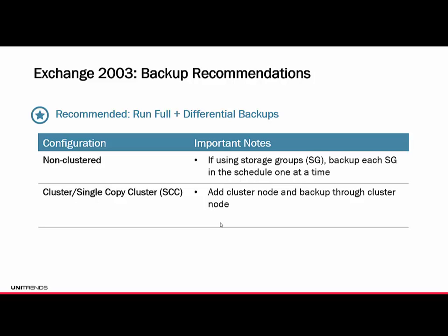For Exchange 2003, run full and differential only — we don't support incrementals for 2003. If it's non-clustered and using storage groups, back up each storage group in the schedule one at a time, staggering them out. If it is clustered with a single copy cluster (SCC), add the cluster node and back up through the cluster node — not the local IP address or local node IP. Make sure you're registering that cluster node IP.